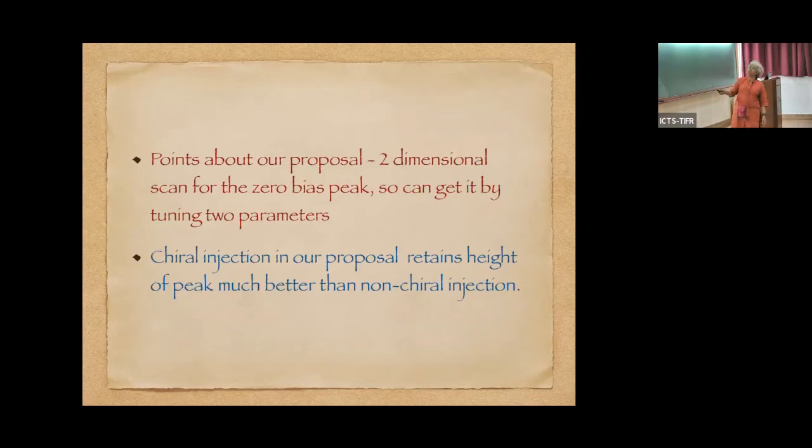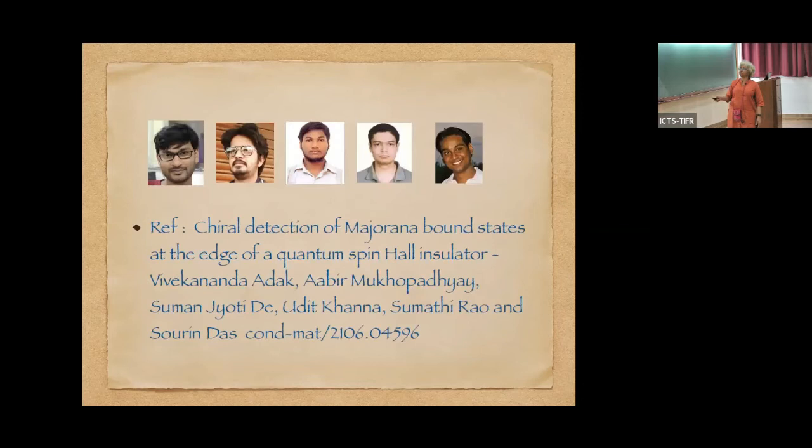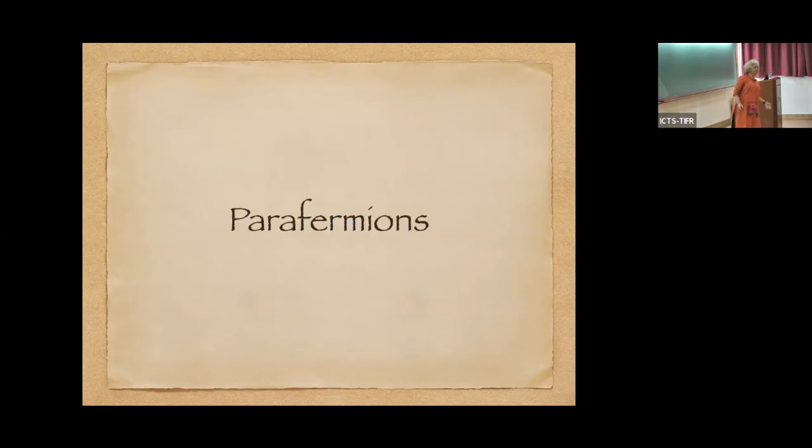The point about our proposal is it's a two dimensional scan for the zero bias peak. So you can get it by tuning two parameters. And chiral injection in our proposal retains the height of the peak much better than non-chiral injection. This is work done in collaboration with Suman who is over here, Sourin from IISER Kolkata and his two students, and Udit who is a former student of mine and who is currently a postdoc in Weizmann. With this, let me come to the second part of my talk, which is parafermions.